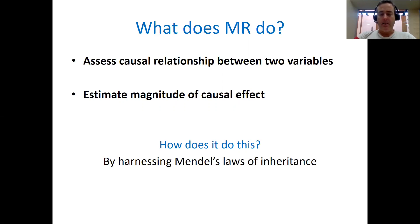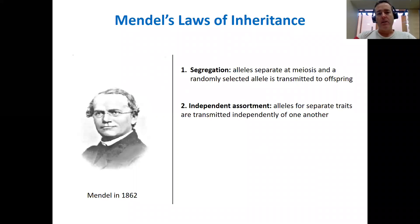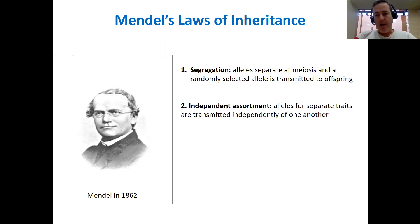Mendelian randomization does this by harnessing Mendel's laws of inheritance. Specifically, it uses Mendel's law of segregation — the idea that which alleles you receive from your parents are random, and most importantly, they're random with respect to environmental confounders. So which allele at a locus is transmitted from your father or your mother is a random process with respect to environmental confounders.